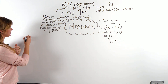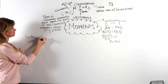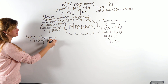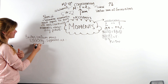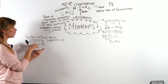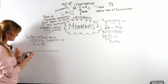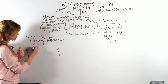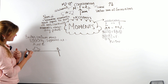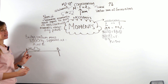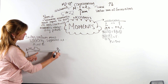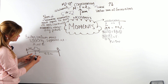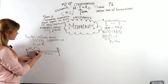Now let's look at a bridge example. We have a bridge with a uniform mass of 8,000 kilograms, supported at points A and B. A car is crossing the bridge: the front tyre is 4 metres from A, and the back tyre is 12.5 metres from B. The front tyre exerts a force of 1,500 newtons and the back tyre exerts 4,800 newtons.